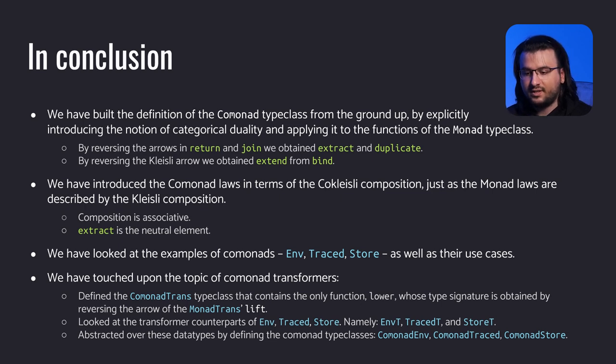We defined the ComonadTrans type class containing the only function lower, whose type signature is obtained by reversing the arrow in MonadTrans's lift. We looked at the transformer counterparts of env, traced, and store, and abstracted over these data types by defining the comonad type classes that describe the functionality of the respective data types. Thanks for watching! If you gained something useful from this video, consider giving it a thumbs up, share your thoughts in the comments section, and if you'd like to see more videos like this, consider subscribing to the channel. I'll see you at the next video!